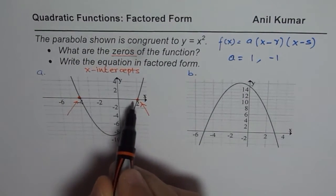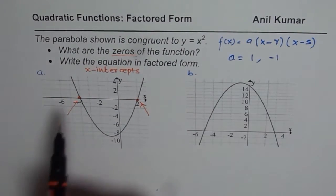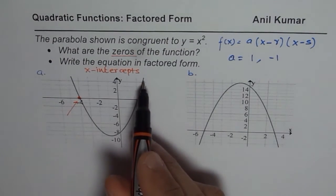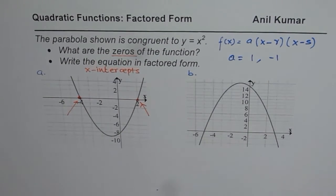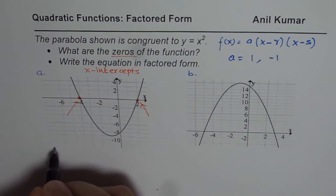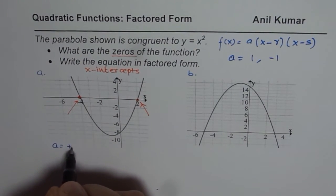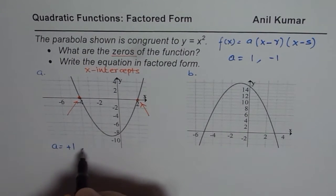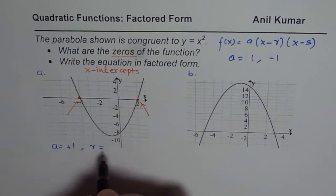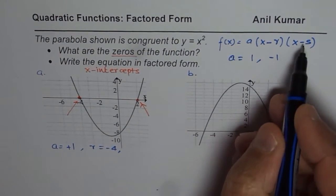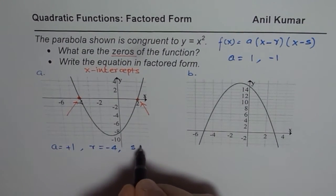So once you know the zeros, you can substitute the value here. This graph opens upwards, so A is positive 1. So in this particular case, A is positive 1. So we can write A equals plus 1, and as far as the zeros are concerned, that means R value is minus 4 using this equation and S value is 2.